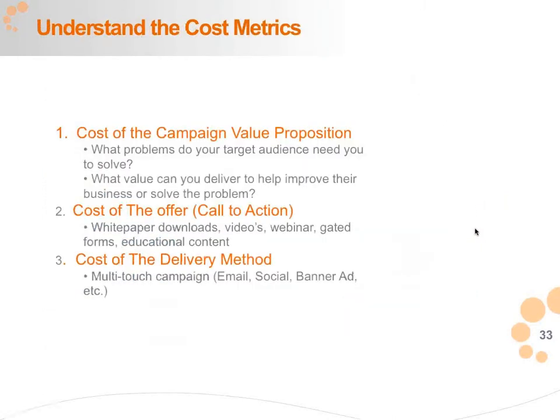Calculating the ROI is not just straightforward — you need to understand your cost metrics as well. What is the cost of your campaign value proposition? What problems are you solving for your audience, and what does that cost you? What is the cost of delivery for various channels? What is the cost of the offer? You really need to make sure that you understand your cost metrics properly. To reiterate the five steps we defined: establish the metrics to measure the ROI, map the data sources, understand your customer journey and use the right revenue attribution model, understand your cost metrics, and then finally establish your reporting and insights.